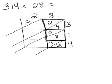2 times 3 is 6, no tens, 6 ones. 2 times 1 is 2, no tens, 2 ones.